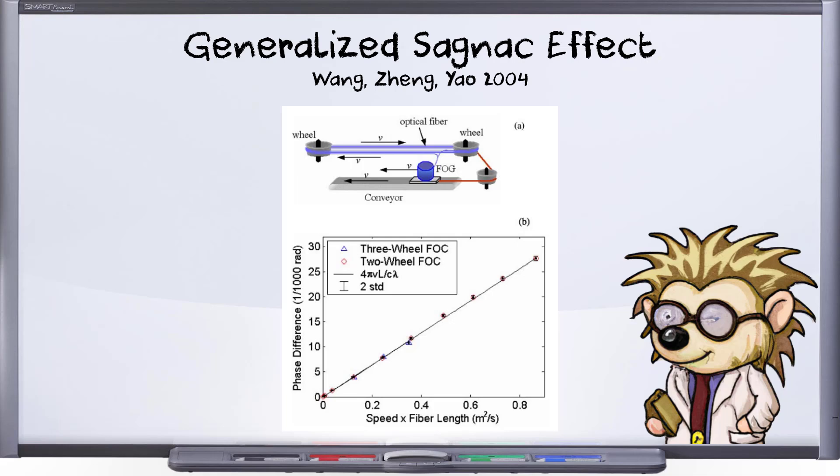Apologies to the co-authors, I'm just going to refer to this by the lead author's name, Wang, for now. What Wang has done is added an extension to the gyroscope's fiber optic cable and wrapped it around a pair of wheels here. The cable then comes out of the fiber optic gyro, goes around what I'm calling the racetrack, and then returns into the fiber optic gyroscope for interferometry as before.